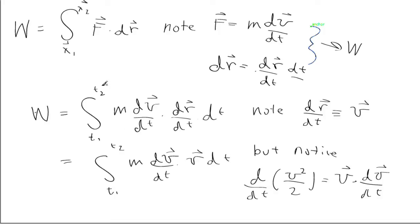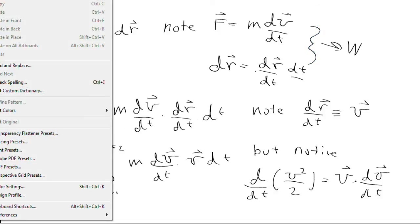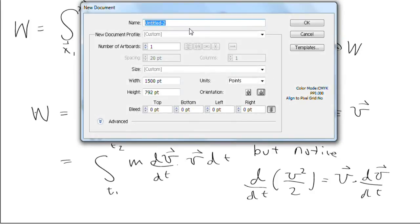So now carrying over this point, we can write that the work is equal to the integral from e1 to e2 of mass times the derivative with respect to time of the quantity dt.